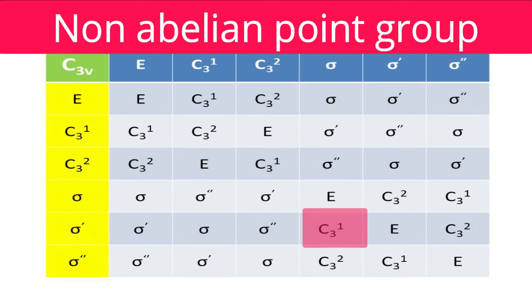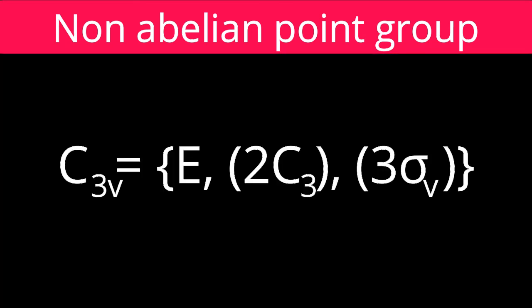It is confirmed that the C3v point group is non-Abelian. The specialty of a non-Abelian group is that the number of classes is not equal to the order of the point group. C3v has order six (six operations), but only three classes: identity (order 1), the C3 class (C3¹ and C3², order 2), and the vertical planes class (σ, σ', σ'', order 3).